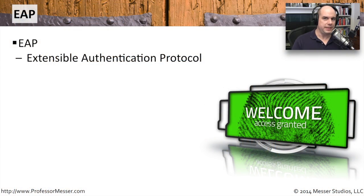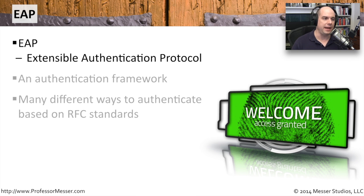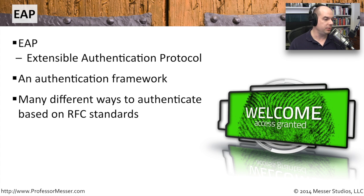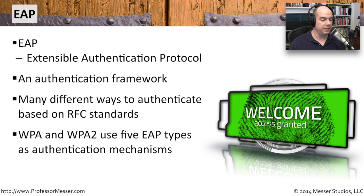Now that you've decided how to encrypt the data going over your network, we need to think about how we authenticate people to use the wireless network. There are some standard protocols you can use to do that: EAP, PEAP, and LEAP. EAP, or Extensible Authentication Protocol, is a very common set of frameworks used to authenticate people onto wireless networks. WPA2 and WPA use five different EAP types as authentication mechanisms.